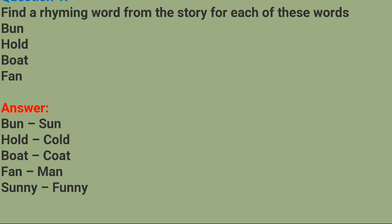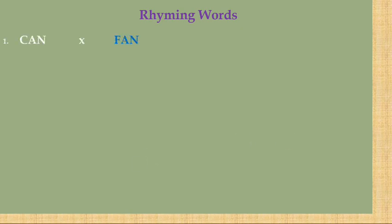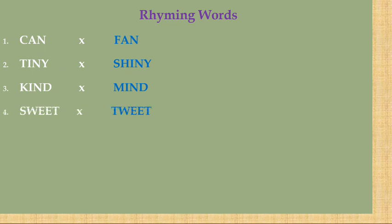Kuch aur rhyming words: can (C-A-N) – fan (F-A-N); tiny (T-I-N-Y) – shiny (S-H-I-N-Y); kind (K-I-N-D) – mind (M-I-N-D); sweet (S-W-E-E-T) – tweet (T-W-E-E-T); man (M-A-N) – van (V-A-N); go – so. Yeh sabhi rhyming words hain.